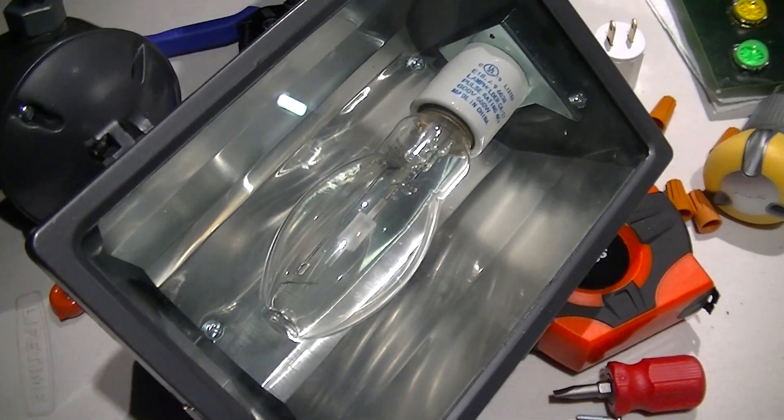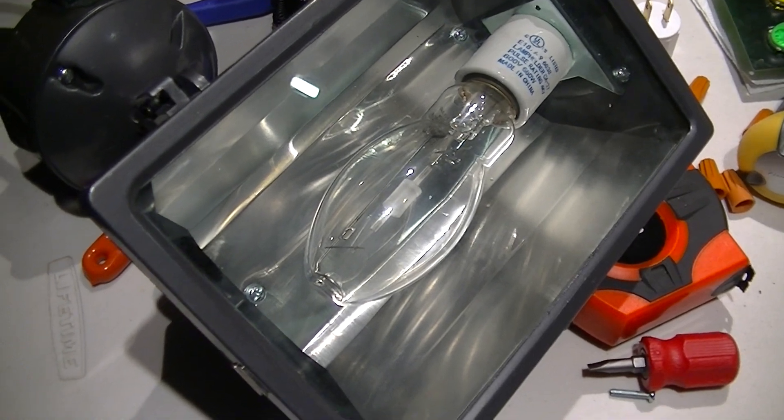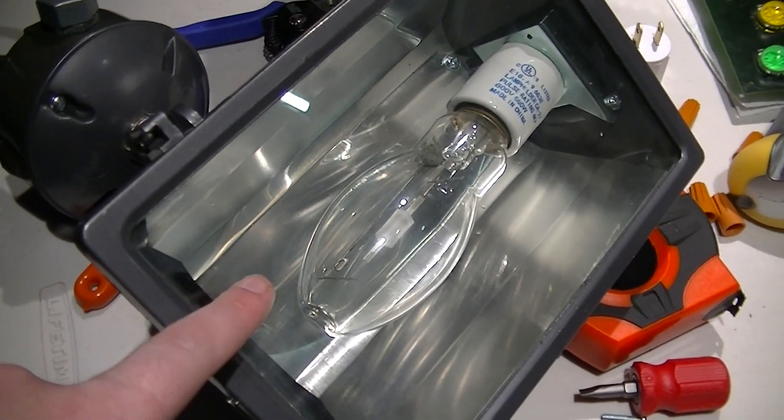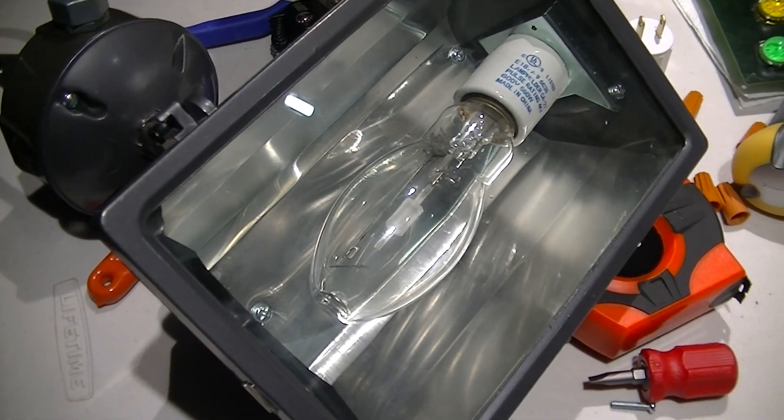This is a bit of a video about something to be on the lookout for when testing or using new old stock ceramic metal halide lamps. For example, this particular lamp was made in February of 2002 and it's now November of 2021.